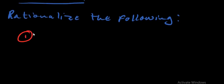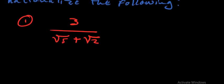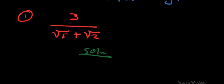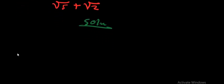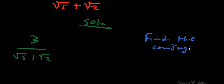So the first example is: rationalize 3 over square root 5 plus square root 2. The first thing I'm going to write is the solution. When we talk of rationalizing, we are getting rid of the surds on the denominator. Since our question is 3 over square root 5 plus square root 2, the first step is we are going to find the conjugate of the denominator.